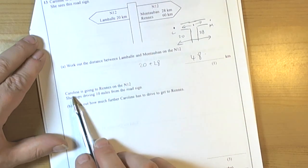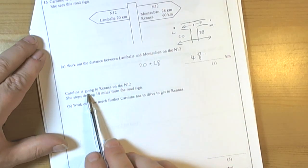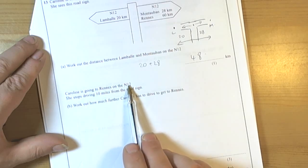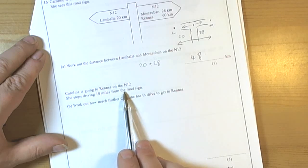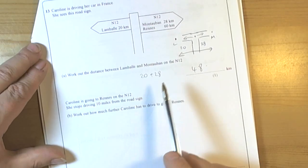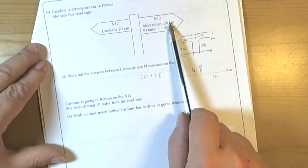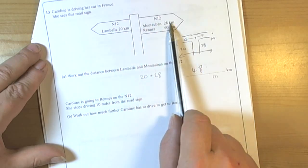The next part of the question asks us to think about if she's going to Ruan on the N12. She stops driving 10 miles from the road sign. Well, we've got to remember that when we see a question involving a mix of units, the original signpost is in kilometres.